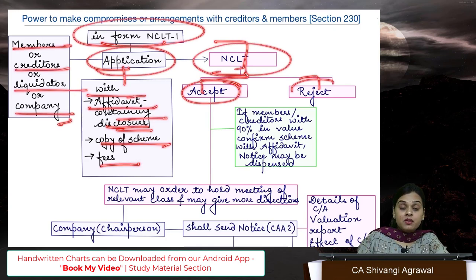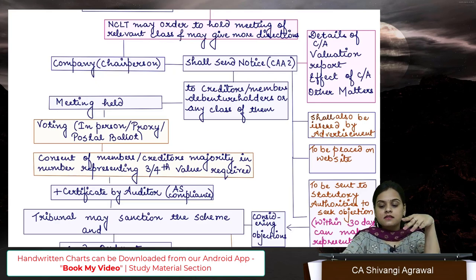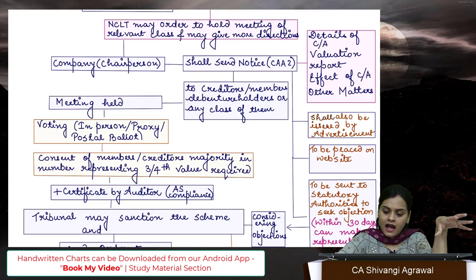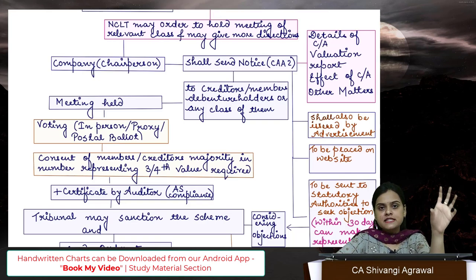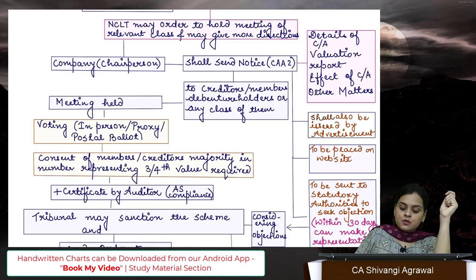This application will be accompanied by an affidavit containing disclosure, copy of the scheme, and fees. The application may be accepted or rejected. Once accepted, NCLT orders the holding of a meeting of the concerned creditors and members to check whether they are happy and have approved it. NCLT asks the company to send notice to your creditors and members, take their approval, and thereafter report whether they have approved or not — then NCLT will consider and sanction your scheme.